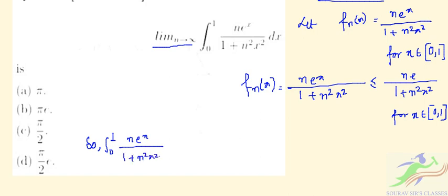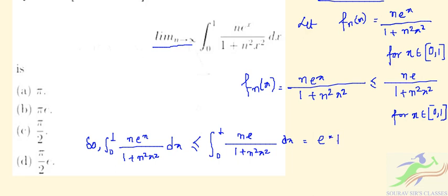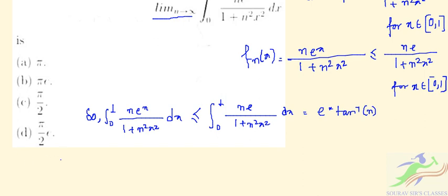So if we do the integration from 0 to 1 of n·eˣ divided by (1 + n²x²) dx, it should be less than or equal to the integration from 0 to 1 of ne divided by (1 + n²x²) dx. This evaluates to e multiplied by arctan(x) — that is, e times arctan(n).